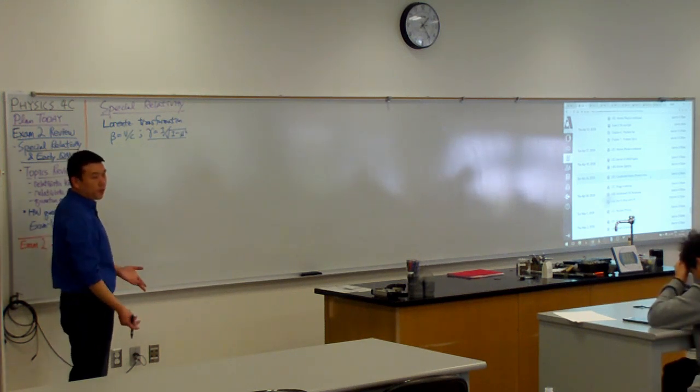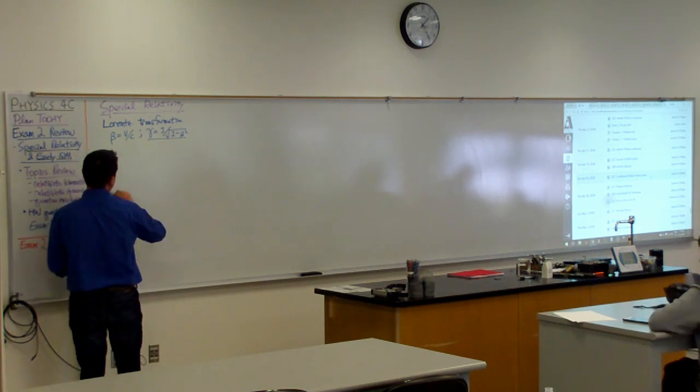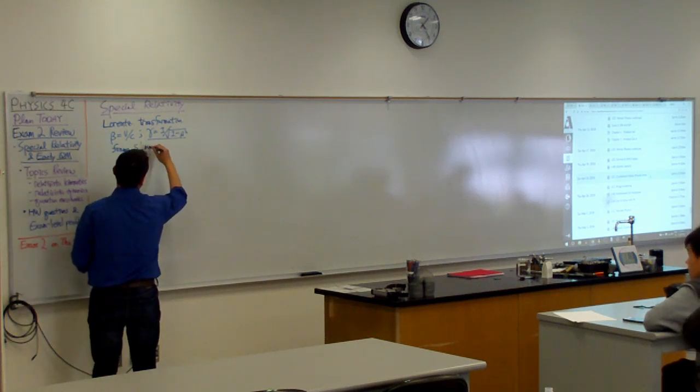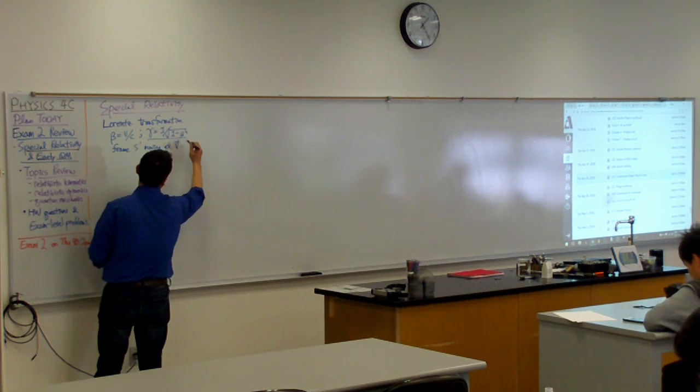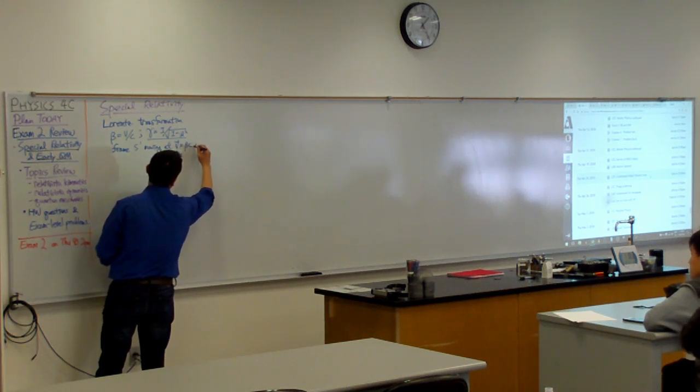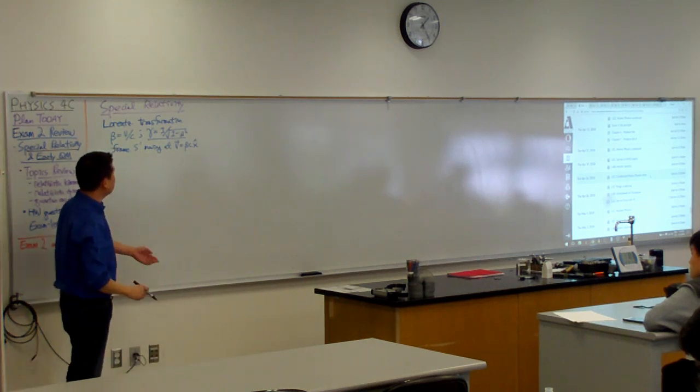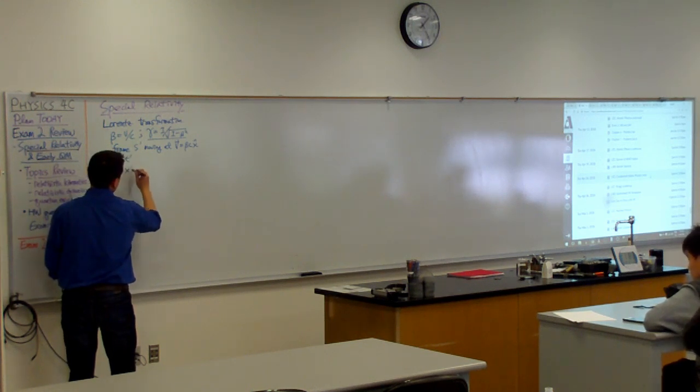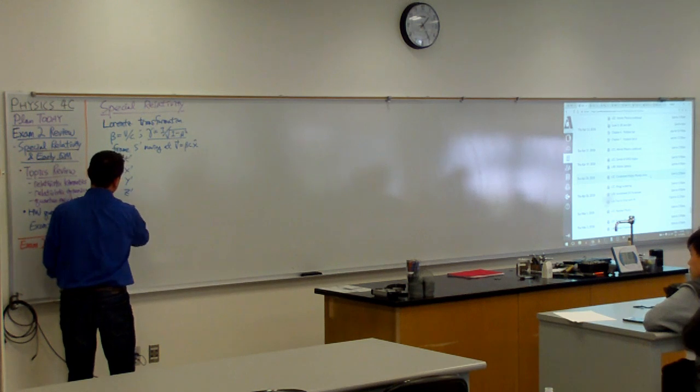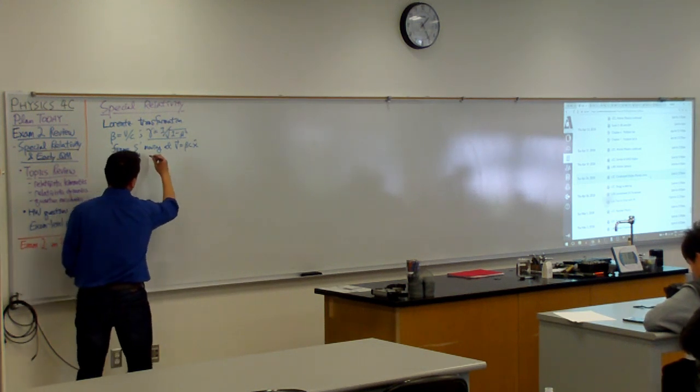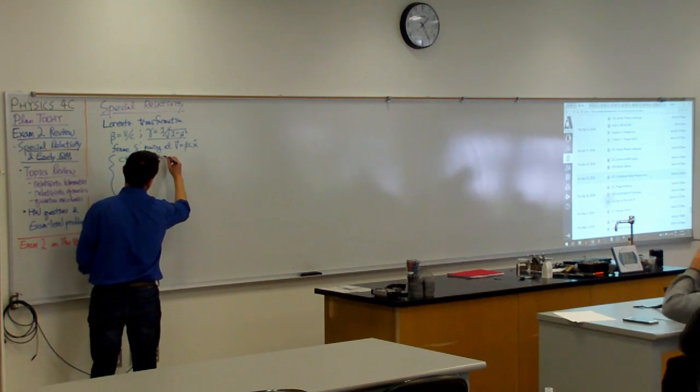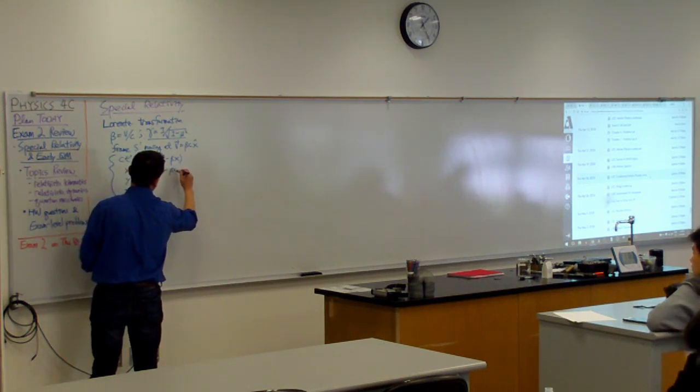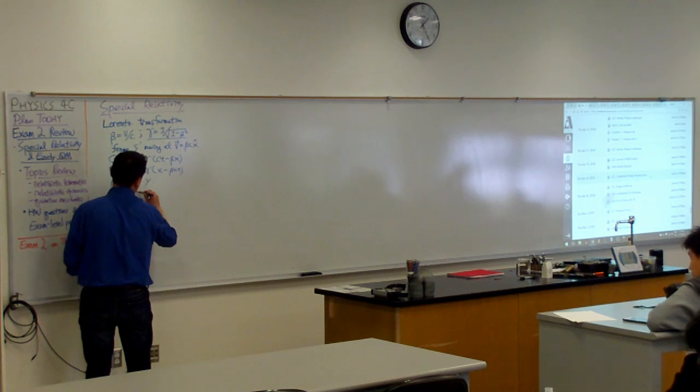This is the form I always write down in. So you have frame S prime moving at relative speed of beta C in the positive x direction relative to frame S. Then this is the transformation rule. The time coordinate, position coordinate in the S prime frame is given by this Lorentz transformation: gamma Ct minus beta X, gamma X minus beta Ct, Y and Z.